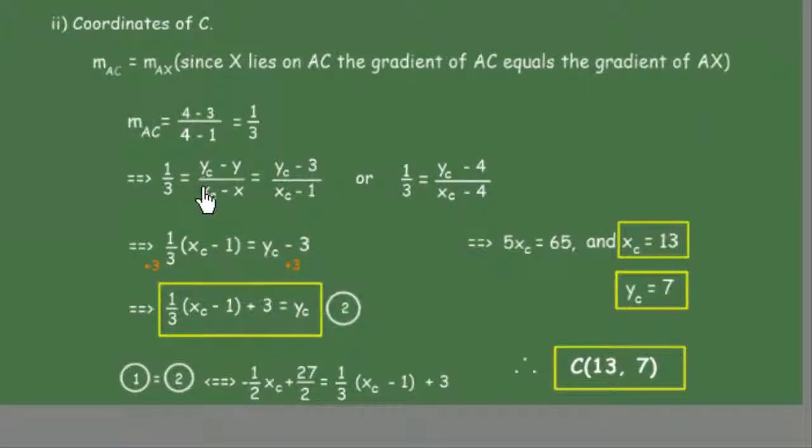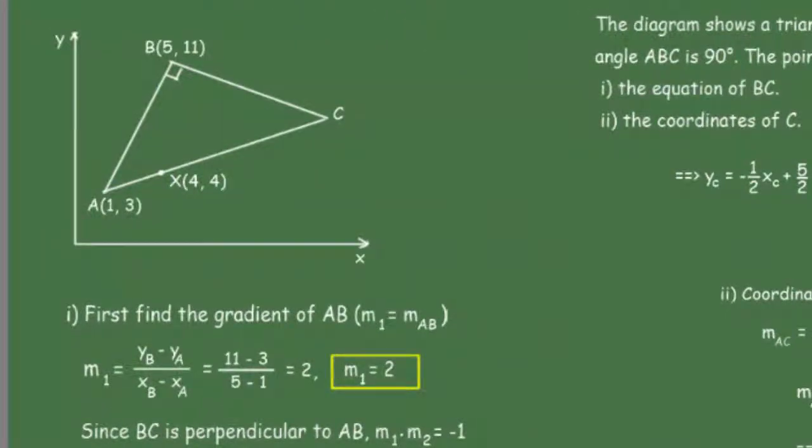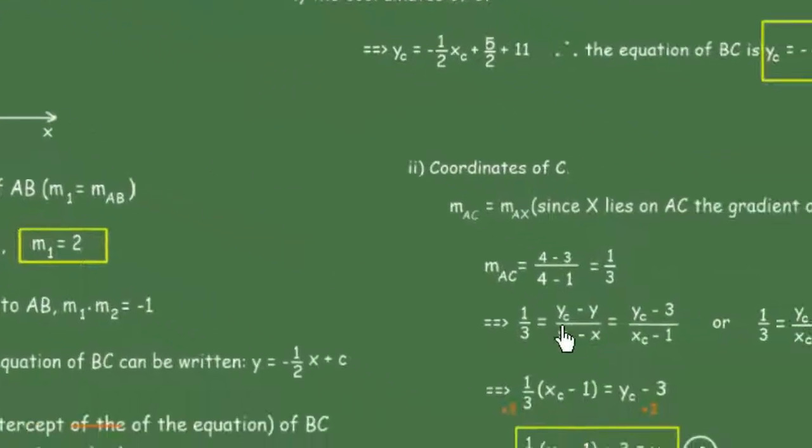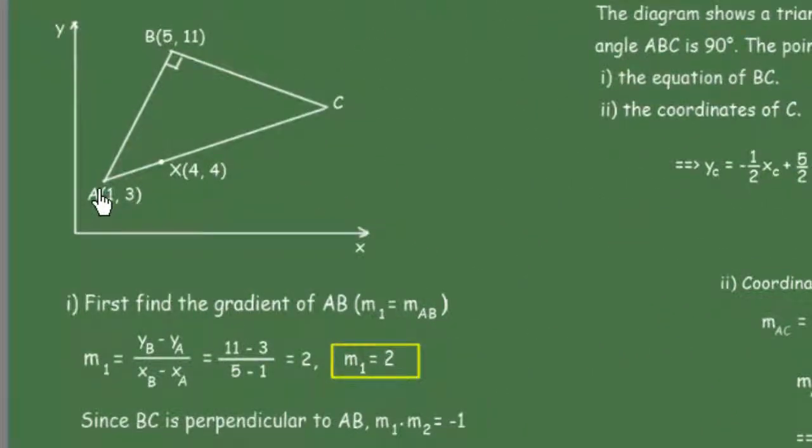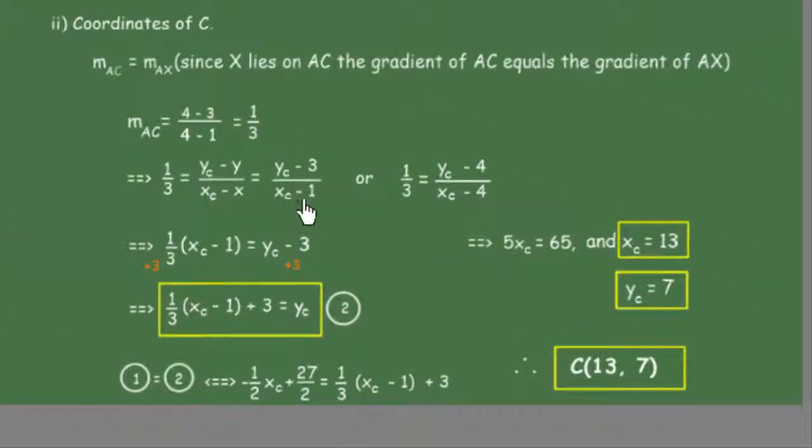We can use the gradient to find the coordinate of point C. 1/3 = (y_C - y_A)/(x_C - x_A) = (y_C - 3)/(x_C - 1). Cross multiplying: (x_C - 1) × 1/3 = y_C - 3.